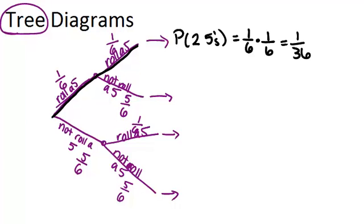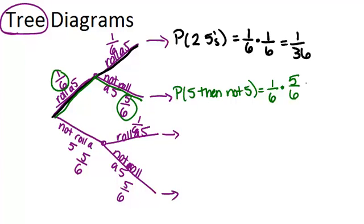Now if we think about this sequence of branches, rolling a 5 and then not rolling a 5, that will be 1 sixth times 5 sixth. So you just multiply the two probabilities together to get 5 out of 36.